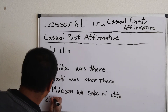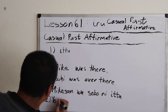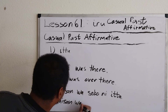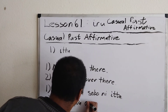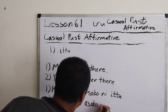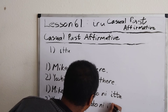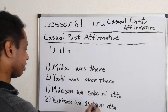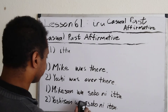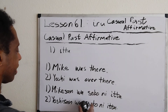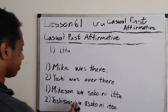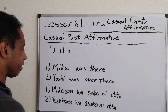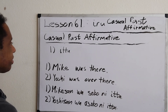Next: Yoshi was over there. Yoshi-san wa asoko ni ita — over there, at, existed. Okay, so that's it for that lesson.